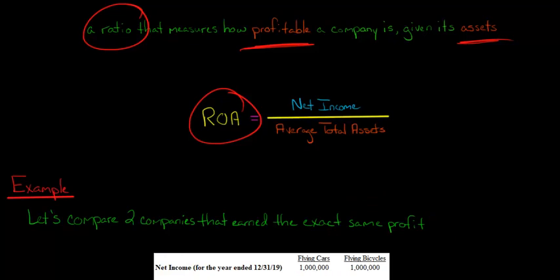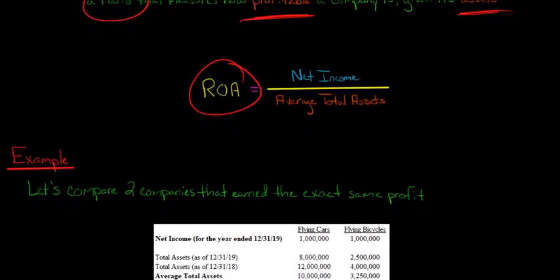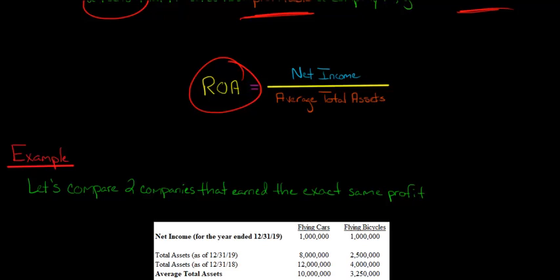So you might think they both did a great job. They both had a million dollar profit. These companies seem pretty comparable. But we can think about, that was their net income, but how many assets did they have at their disposal? If one company had a lot more resources than the other, and they ended up with the same profit, that's going to map into a change or difference in the ROA.